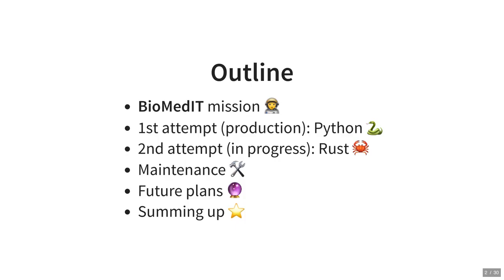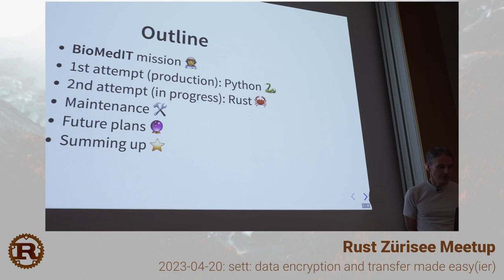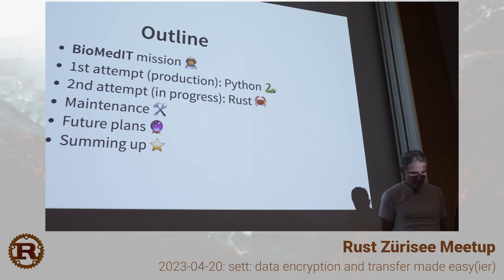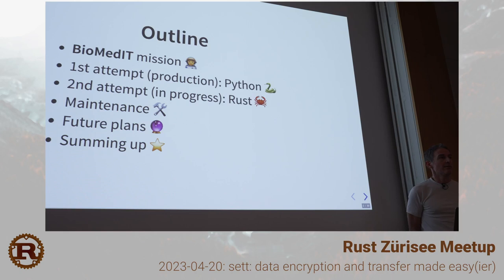The outline looks as follows. First, I will say a couple of words on the BiomedIT mission. Then I will explain why we decided to go for Python in the first attempt, what we learned by using Python, and how we try to improve our tools with Rust. Then we are talking about maintenance, future plans, and we'll summarize what we have seen.